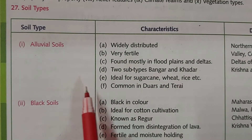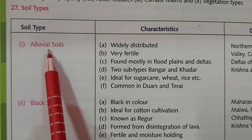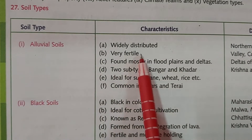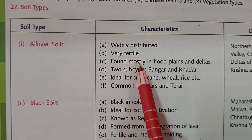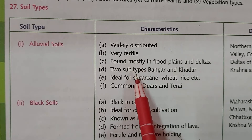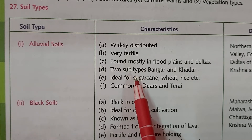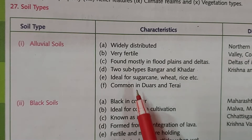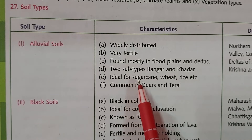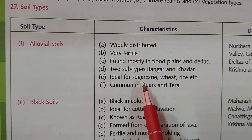The very first soil we'll discuss is alluvial soil. It is widely distributed and very fertile. It is found mostly in floodplains and deltas, which are made by the interplay of major rivers like Brahmaputra, Ganga, and Indus. Two subtypes are Bangar and Khadar — Bangar is the old one and Khadar is the new one.